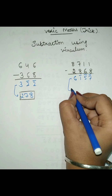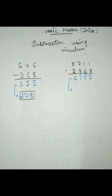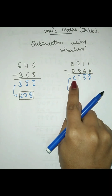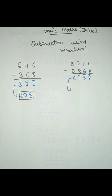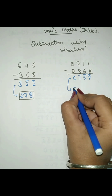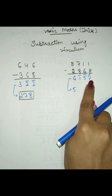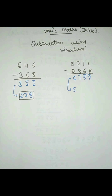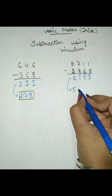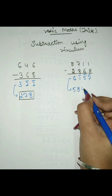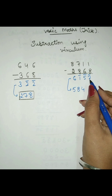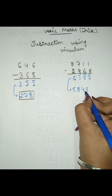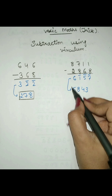Now again we have to apply the rule: we have to reduce the first number by 1 and subtract all from 9 and last from 10. After reducing 6 by 1 we get 5. Then: 9 minus 1 is 8, 9 minus 5 is 4, and 10 minus 7 is 3. So 5, 8, 4, 3 — that is 5843 — is the answer.